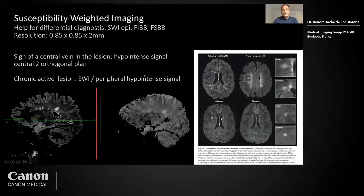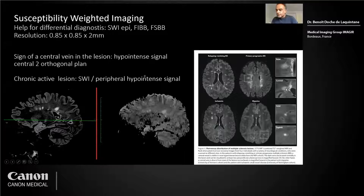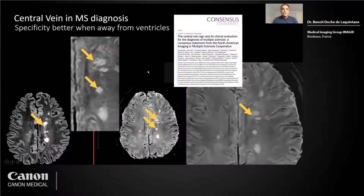Here you see this small black point inside the lesion. An example from a consensus article on the central vein sign shows that you need to have two orthogonal hypointense signals inside the lesion to say that it is probably inflammatory. In ischemia and migraine, you don't usually have these hypointense signals. The specificity of this hypointense signal inside the lesion is better when you are away from the ventricles, because close to ventricles you expect to see that. I recommend reading that article on the central vein sign.